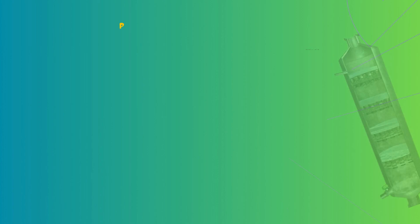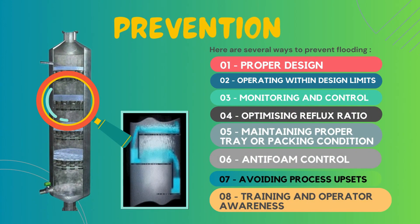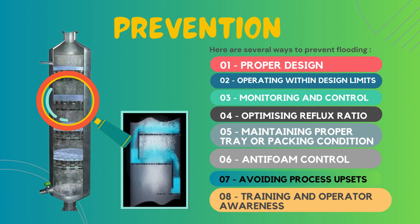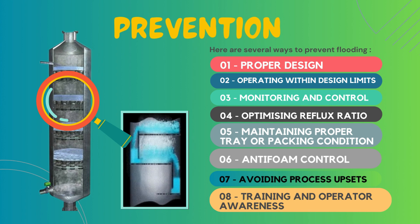Now let's look at the preventive measures to prevent flooding in a distillation column. Preventing flooding requires careful consideration of various factors and implementation of appropriate measures. The first way is having a proper design — ensuring the distillation column is designed with adequate tray or packing spacing, proper tray or packing efficiency, downcomer capacity, and proper column diameter to handle the expected liquid and vapor flow rates.